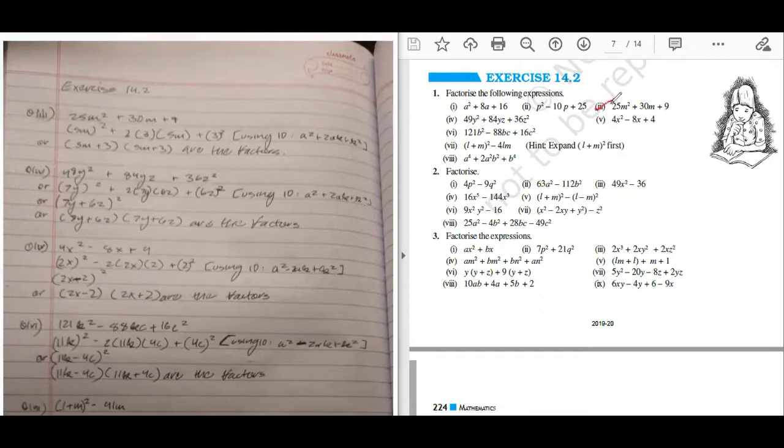Third part, so 5m whole square, just 3 square, 2, 3, 5m. After that, make sure you write that step also. 5m plus 3 whole square. Okay, this is correct.